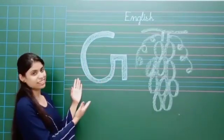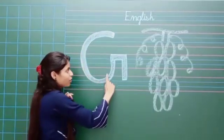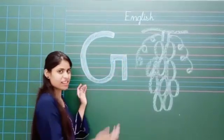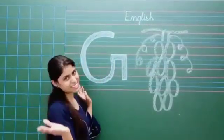This is letter G. Left half circle goes up, sleeping line and standing line. This is the letter G.